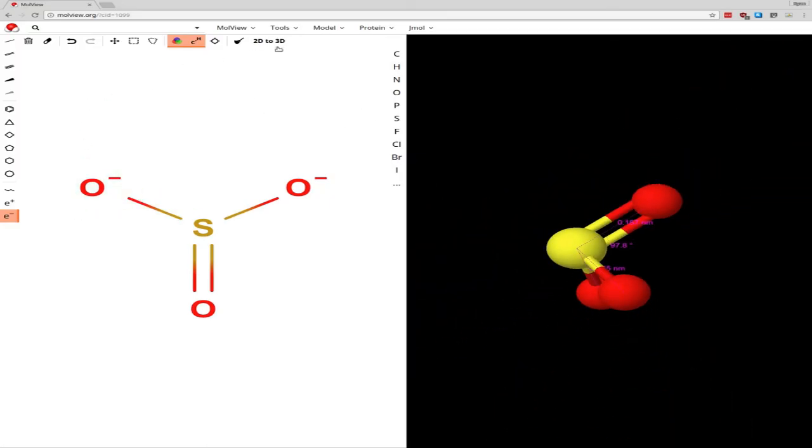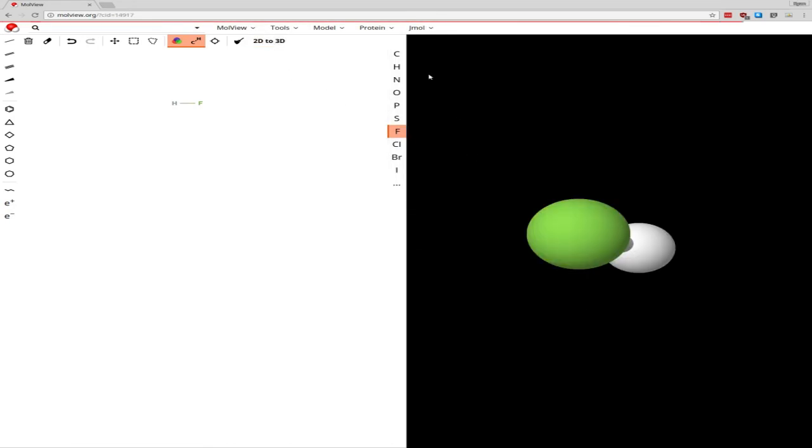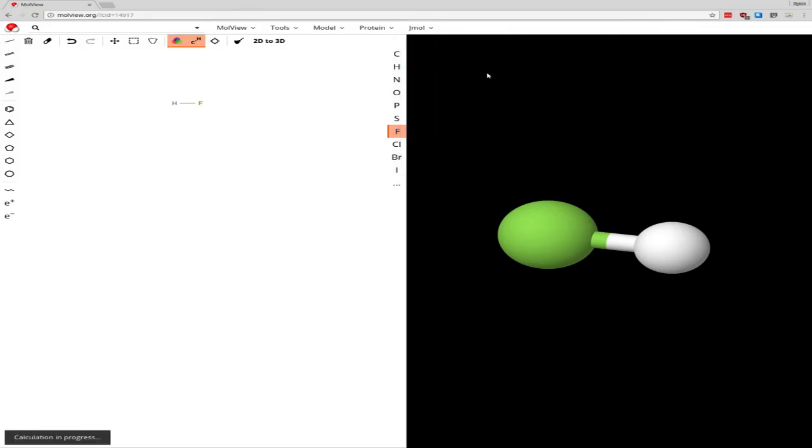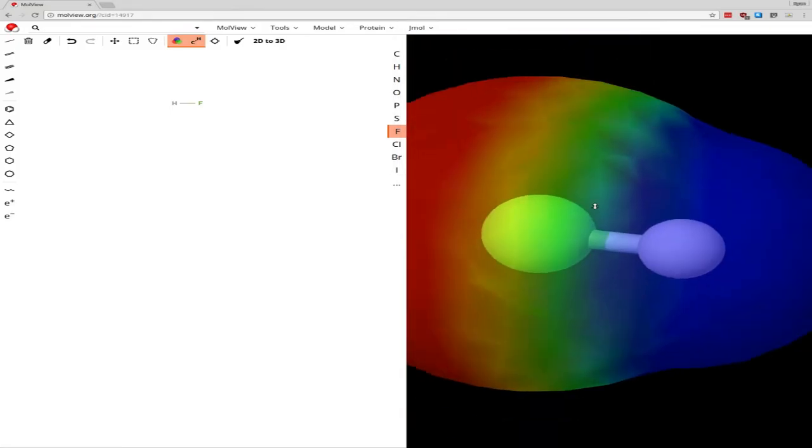Now let's look at something that has a high electronegativity difference, like hydrofluoric acid. Now we can go over to Jmol. Let's go ahead and do the 3D rendering first. Now we can go over to Jmol, and we can ask it to do a charge mapping. We have the options of a translucent mapping, where you can see the interior atoms, or an opaque mapping, where you just see the color grid.